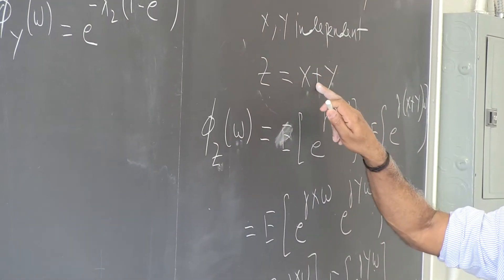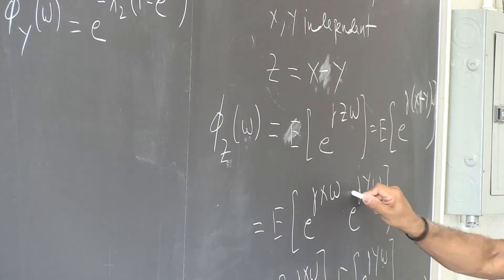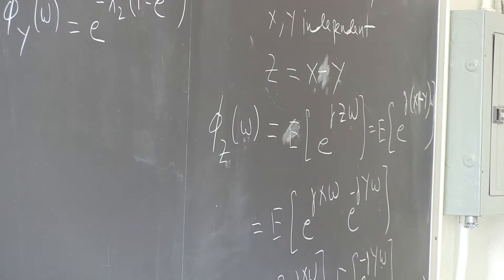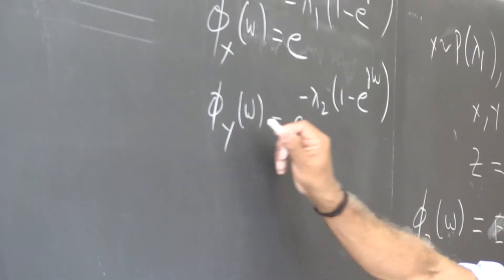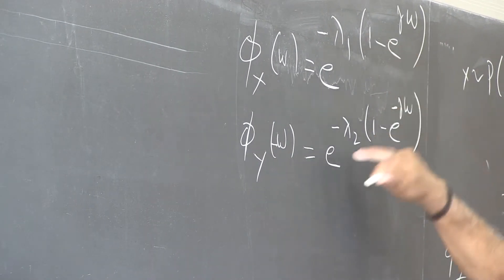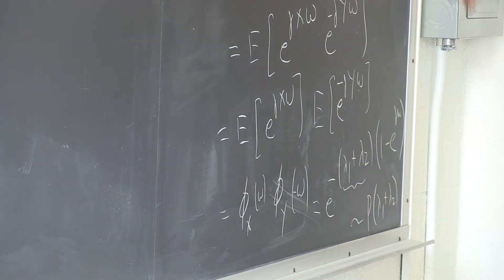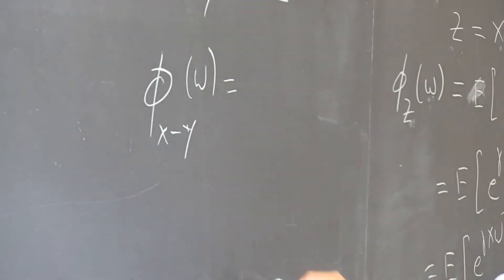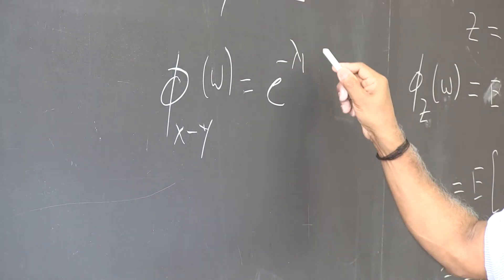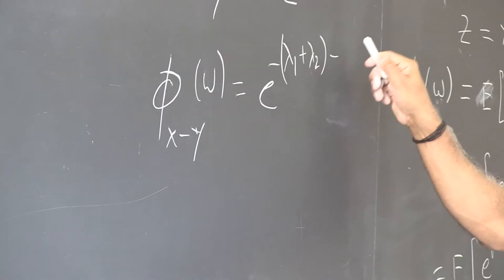You may ask: what if we try this with a minus sign — that is, the difference of two random variables? Consider Z = X − Y. There will be a minus sign in the exponent for the Y term. When you substitute the minus sign and multiply the two characteristic functions together, everything gets mixed up. So you can already see that the difference is not Poisson, because the characteristic function of X minus Y becomes e raised to −(λ₁ + λ₂) plus λ₁·e^(jω) plus λ₂·e^(−jω), which is not the characteristic function of any Poisson variable.